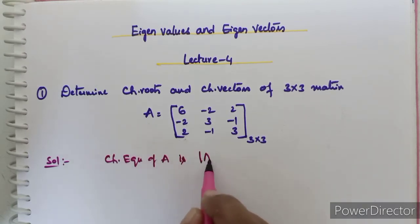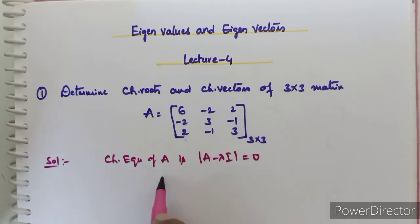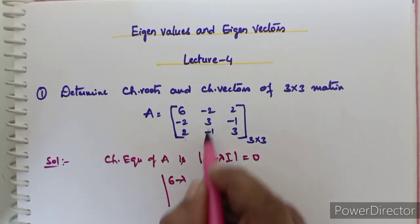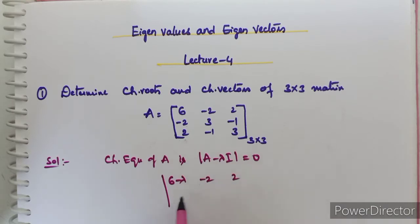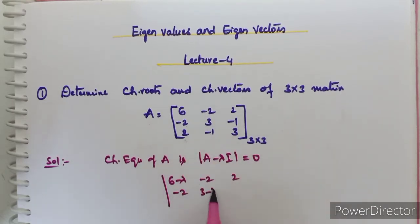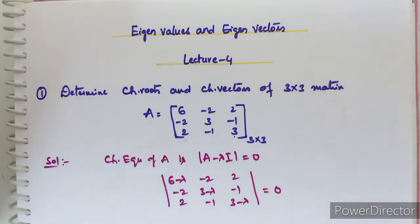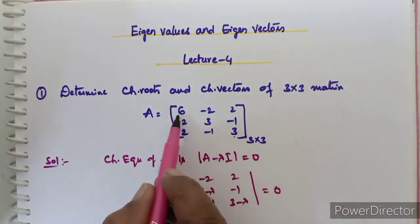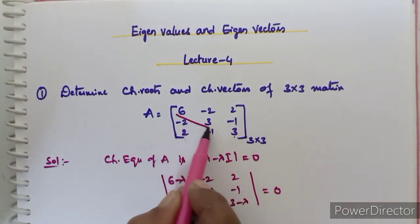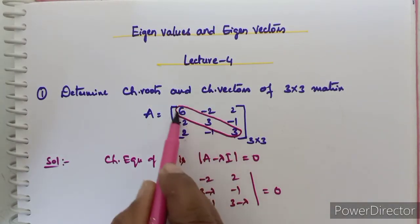The characteristic equation is given by det(A - λI) = 0. We form det of 6-λ, -2, 2 / -2, 3-λ, -1 / 2, -1, 3-λ. This is the characteristic equation — we simply subtract λ from the principal diagonal elements.